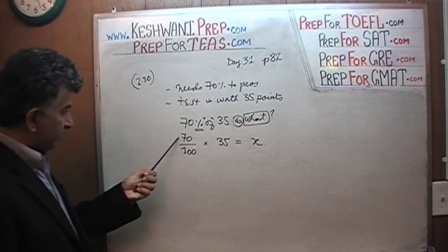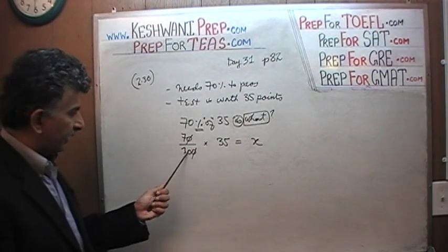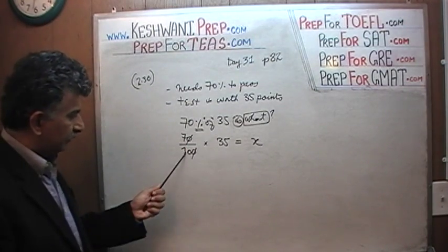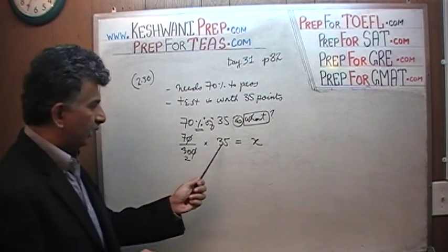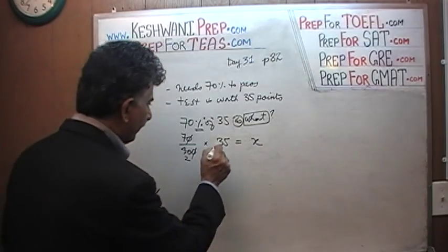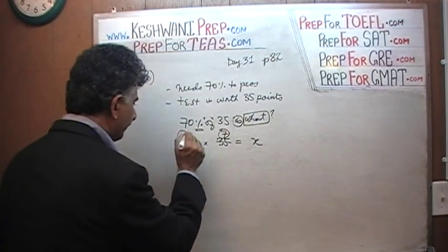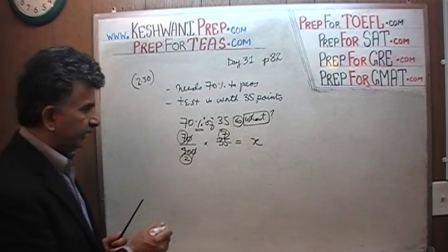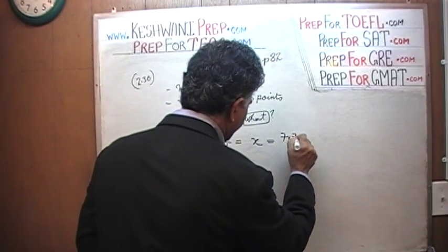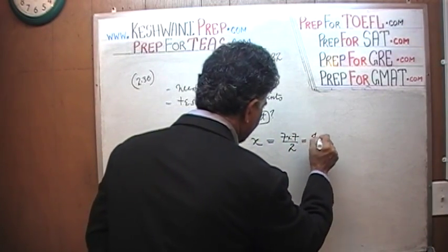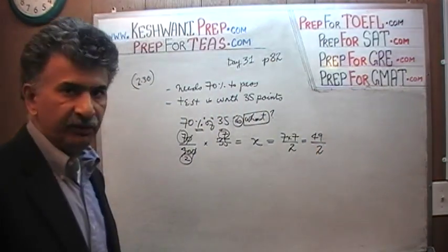Divide top and bottom by 10 — the zero cancels out. Now let's divide top and bottom by 5s. How many 5s in 10? 10 has two 5s. How many 5s in 35? 35 has seven 5s. So we're left with 7 times 7 over 2, which is 49 over 2. And that's our answer — that's how many points he needs.